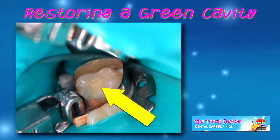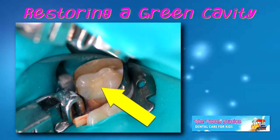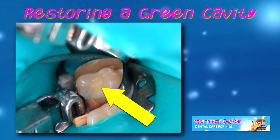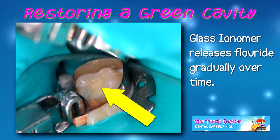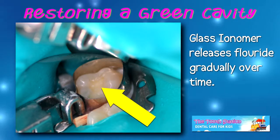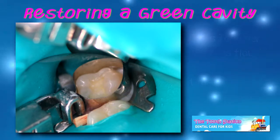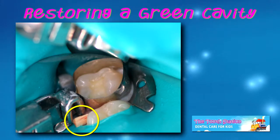The white material placed in the tooth is called glass ionomer. It helps prevent sensitivity to cold and helps prevent additional decay by releasing fluoride gradually over time. The wooden wedge seals the band to the tooth.